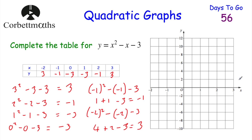Let's plot our points: 3, 3; 2, negative 1; 1, negative 3; 0, negative 3; negative 1, negative 1; and negative 2, 3. Now we'll draw a nice curve through them. Remember when you reach the bottom, don't go straight across — go down a little further and back up again. That's our U-shaped parabola.